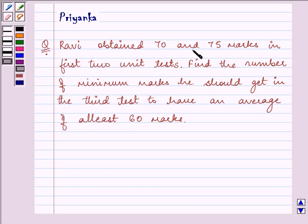Ravi obtained 70 and 75 marks in first two unit tests. Find the number of minimum marks he should get in the third test to have an average of at least 60 marks.